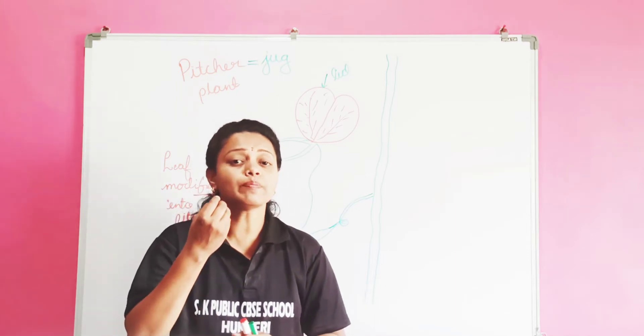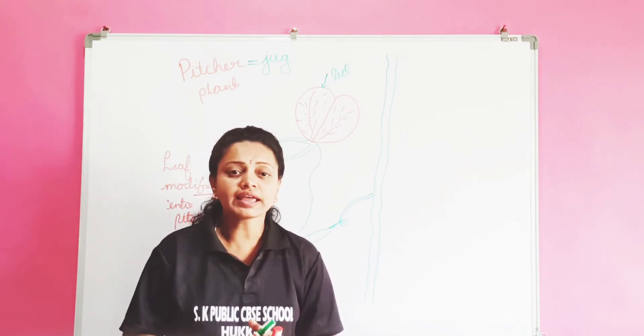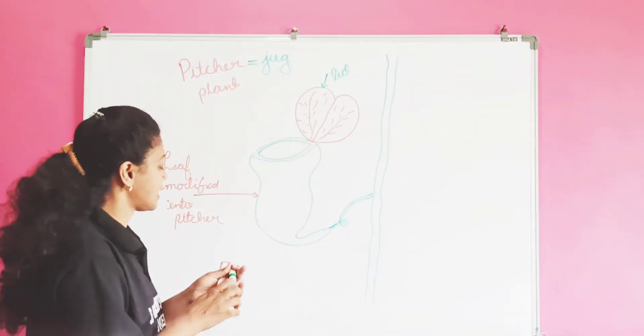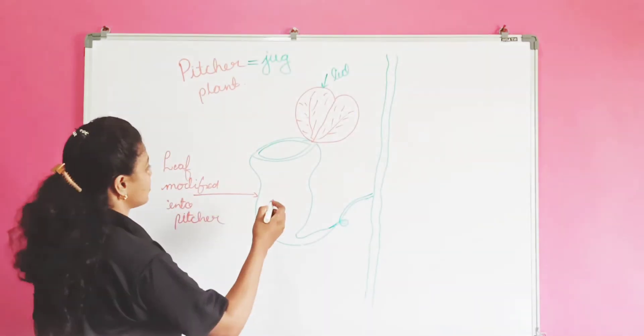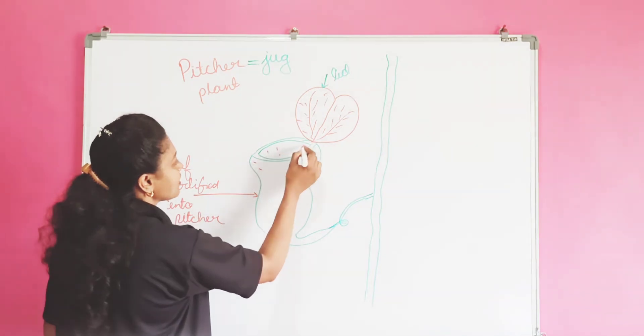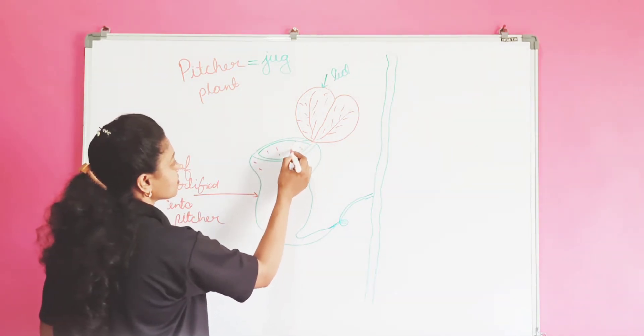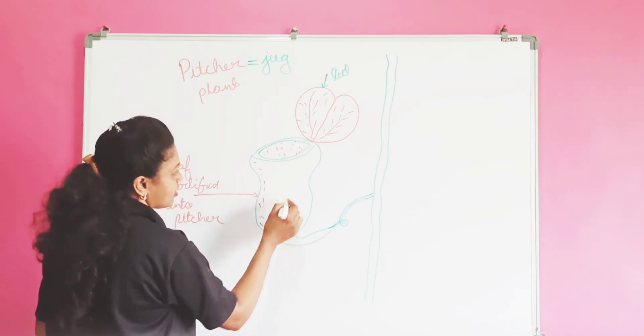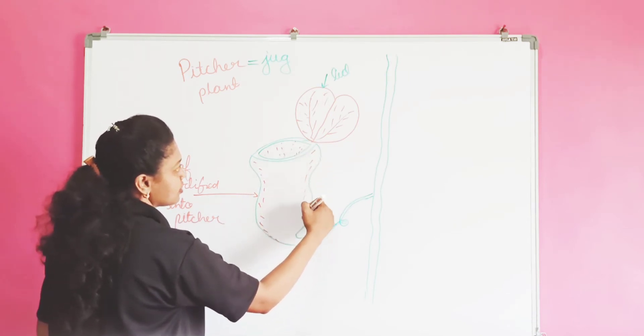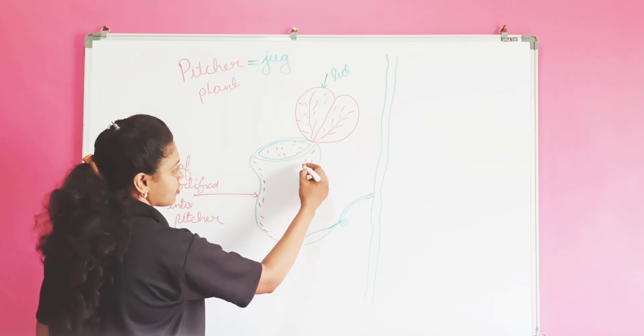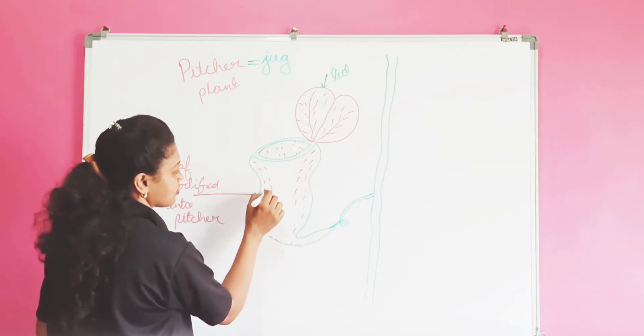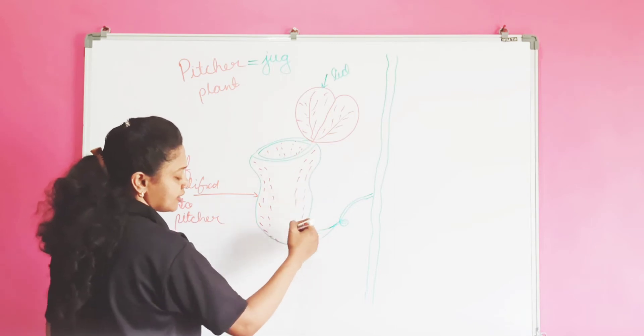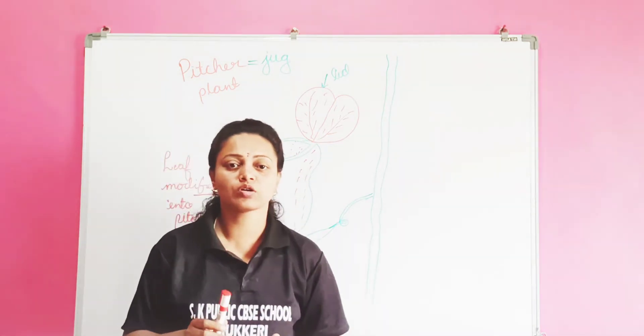Now inside the pitcher there are hairs which are directed downwards. Like inside the pitcher small hairs are there, which are directed downwards.